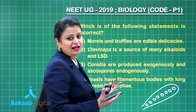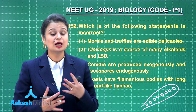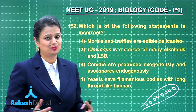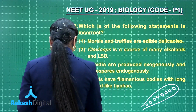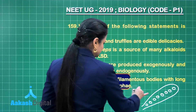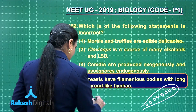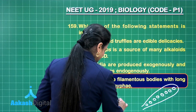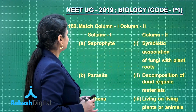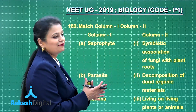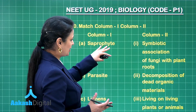The statement that yeast has filamentous bodies with long thread-like hyphae is incorrect — yeast are unicellular fungi belonging to ascomycetes. So this is the right option. Moving on, the next question asks us to match column one and column two.